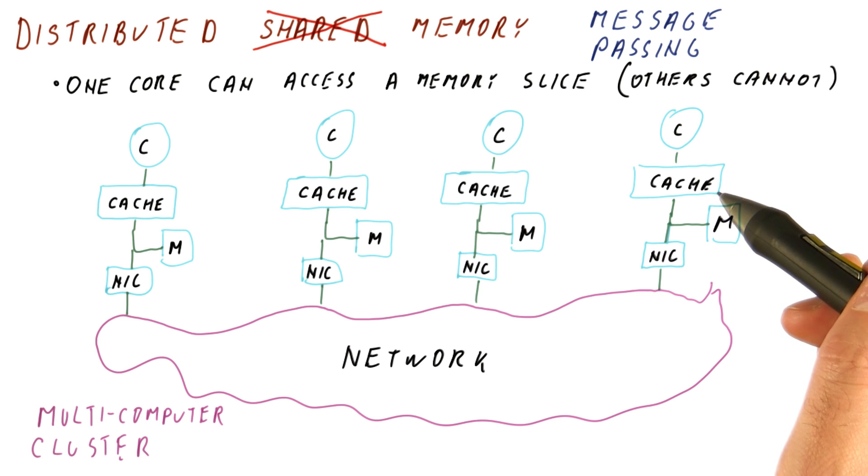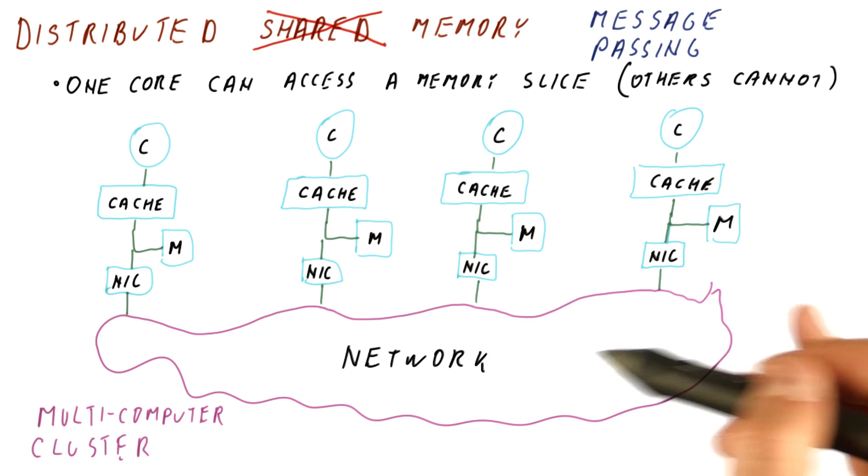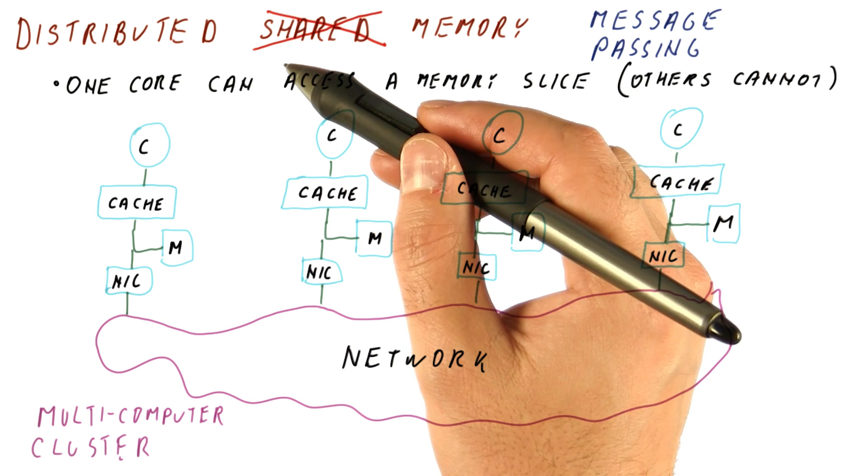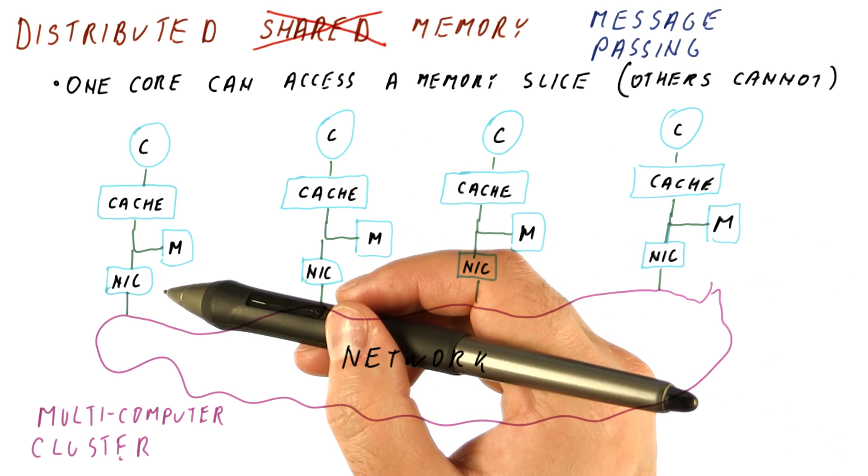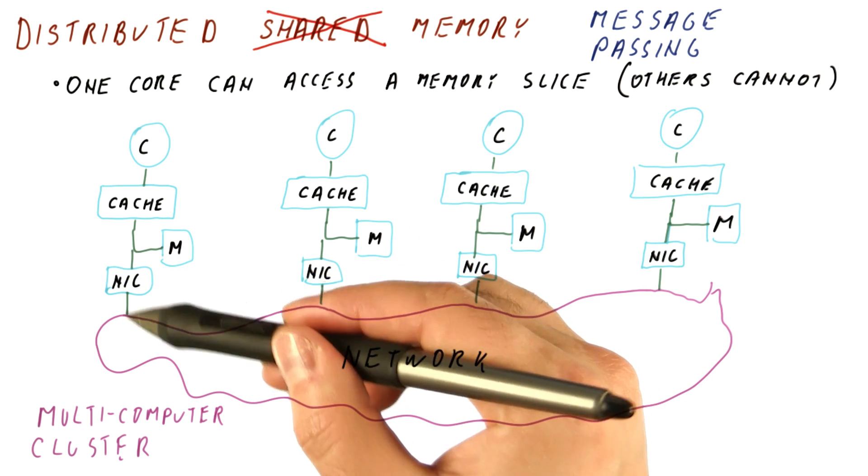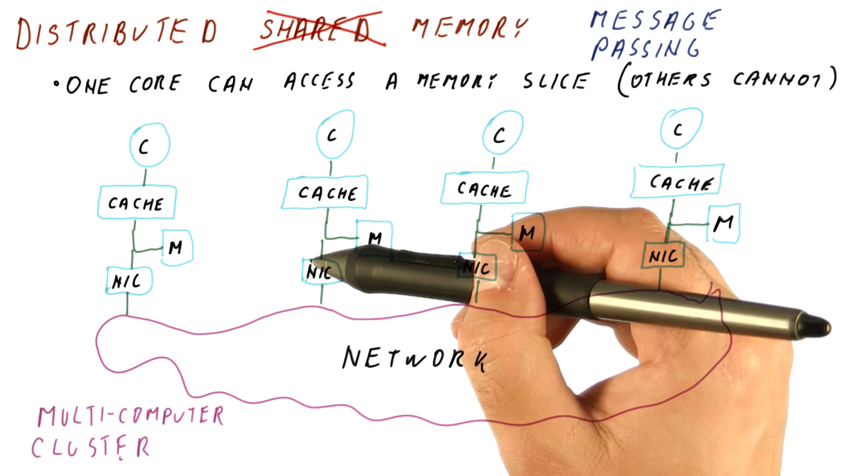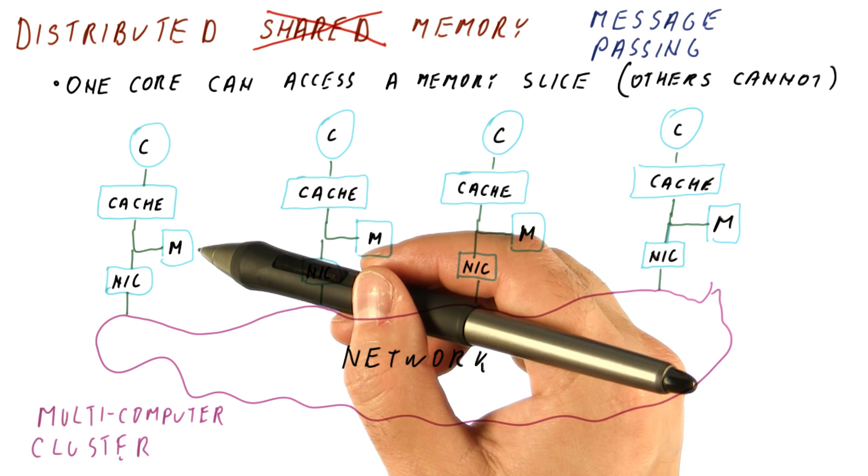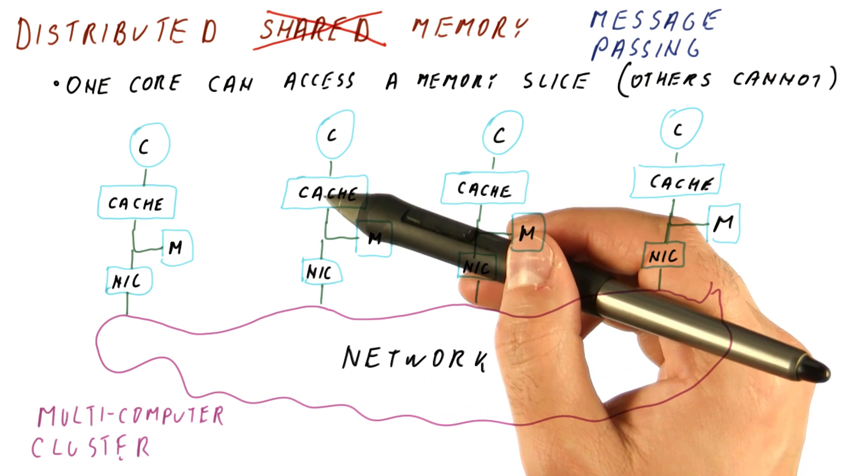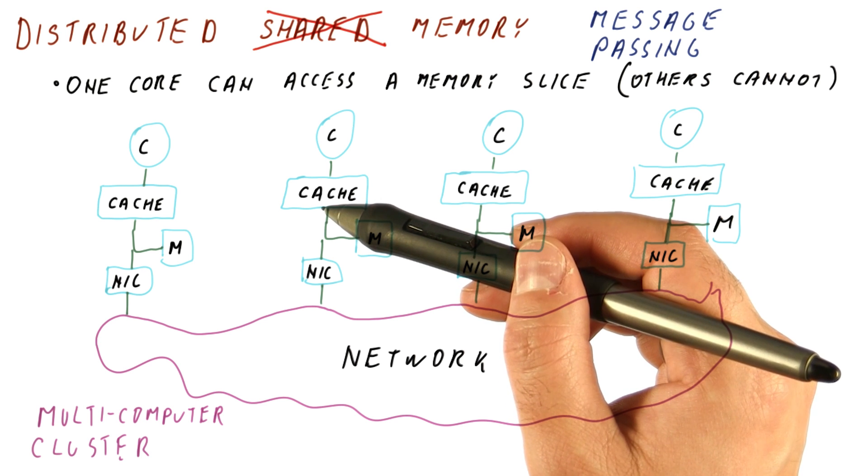The reason is not that they are fundamentally better at communicating than shared memory systems. The reason is mainly that the programmer is forced to explicitly think about communication because you use a different type of primitive to communicate than you use to access your local memory. So the programmer is aware of communication going on, and then naturally, they will tend to minimize communication.